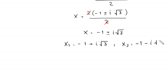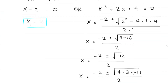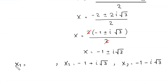So we have three solutions: x₁ equals 2, x₂ equals negative 1 plus i times square root of 3, and x₃ equals negative 1 minus i times square root of 3. Now let's verify whether these values are valid.